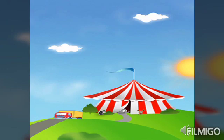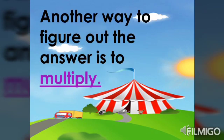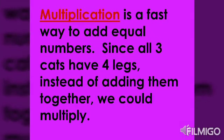Another way to figure out the answer is to multiply. Let us define the word multiplication. Multiplication is a fast way to add equal numbers. Since all 3 cats have 4 legs, instead of adding them together, we could multiply.